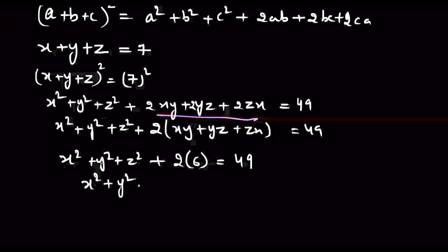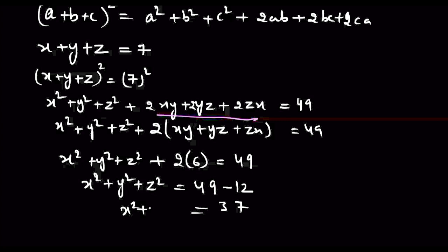जो हमको find out करना था उसकी value आ गई: 49 minus 12 is 37। So x square plus y square plus z square equal to 37.